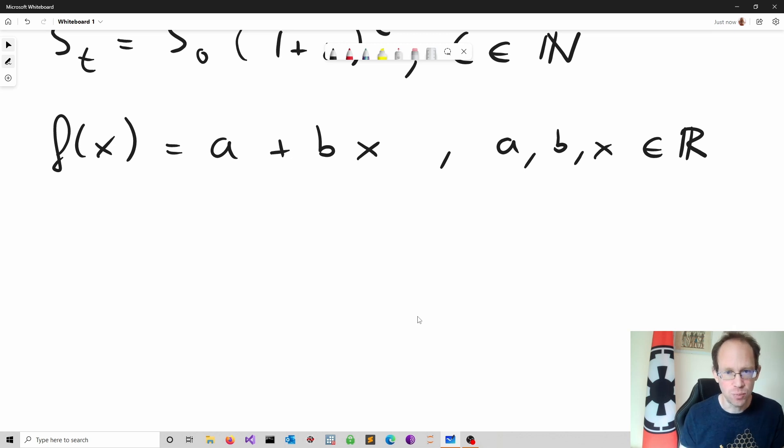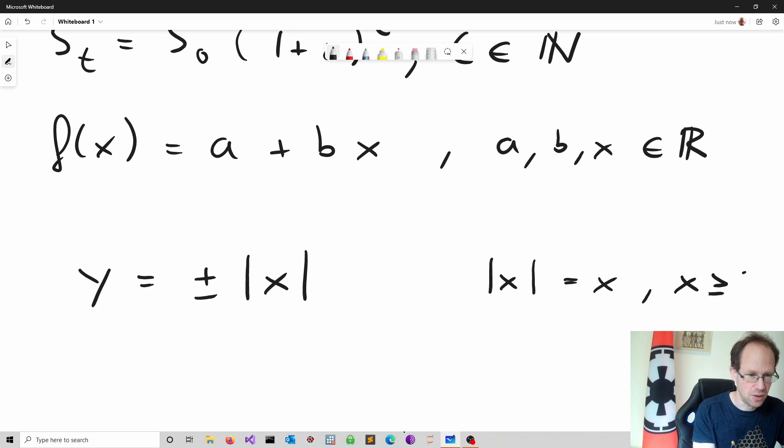Functions need unique output values for a given input value. For instance, the following is not a function, because it does not assign a unique output value to a given value of x. On the right-hand side, you note the modulus or absolute value. Now if x is positive, I can simply write the absolute value of x is equal to x. So this is true for x is larger or equal to 0. If x is negative, I have to negate that. So all the values I obtain have to be positive.